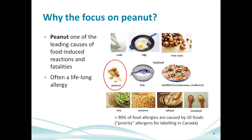Why should we focus on peanuts specifically? Partly because that is the food studied in the LEAP study, but also because peanut is one of the leading causes of food allergy and more severe reactions, and it is very difficult to outgrow. Milk and egg allergy have a far better prognosis for being outgrown in childhood compared to peanut. Health Canada identifies ten key priority food allergens, and the majority of food allergy in children falls within that list.